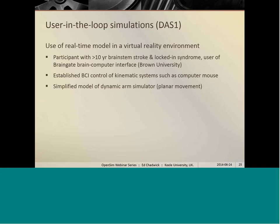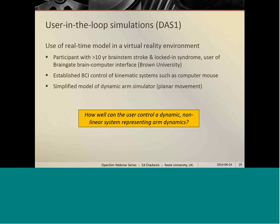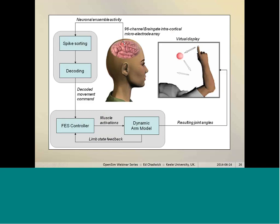So this is an implanted array that records her cortical activity during attempted movements. She had established control of kinematic systems, so a computer mouse using the BCI system but had never attempted control of a dynamic system. So we used a simplified model of a dynamical system to assess her ability to do that. This was an earlier version than the version I've presented today because it only allowed planar movement rather than 3D movement of the limb. So our goal here was to answer the question how well can this user control a dynamic non-linear system representing arm dynamics?